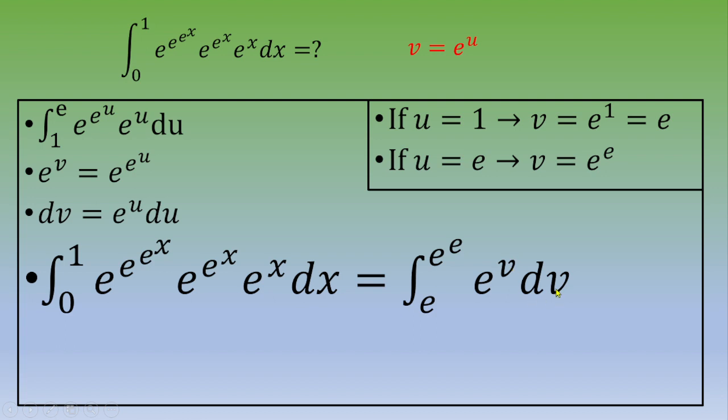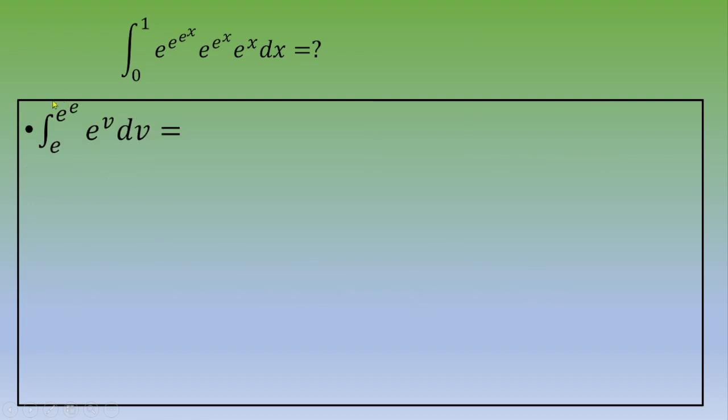So at the end you get integral from e to e to the e of e to the v dv. So now we are going to solve this integral. What is the antiderivative of e to the v? This is e to the v, and this is between e and e to the e.